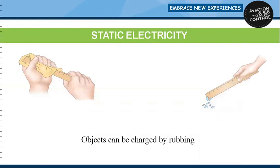Static electricity is usually caused when non-conductive materials such as rubber, plastic, or glass are rubbed together, causing a transfer of electrons, which then results in an imbalance of charges between the two materials. This imbalance of charges means that the objects will exhibit an attractive or repulsive force.